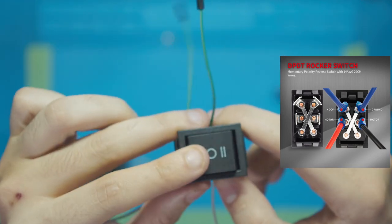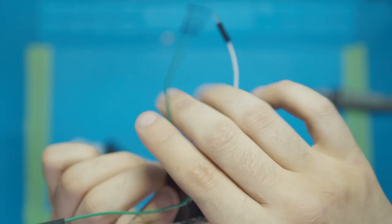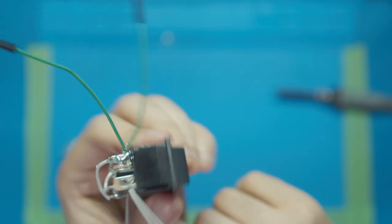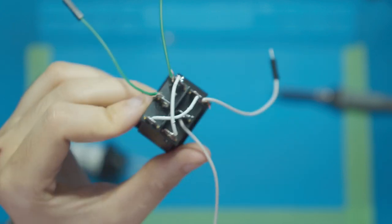Then what should happen is going to position one will make our motor go, let's say, positive on green and negative on white, and then switching that to position two will make this become negative and that go positive. That's how you make a reversing polarity switch.